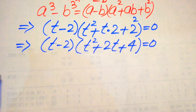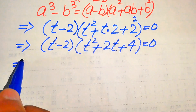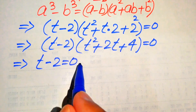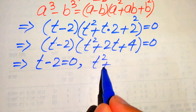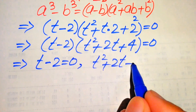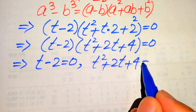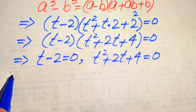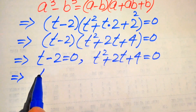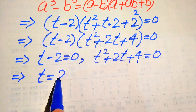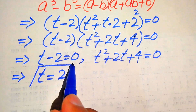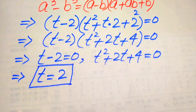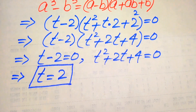We divide this into two cases. The first case: t minus 2 equals 0. The second case: t squared plus 2t plus 4 equals 0. From the first case we easily get t equals 2, which is the first real root of the given equation.